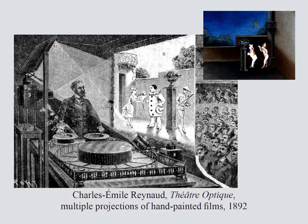Reynaud employed stock characters and stories from the Commedia dell'arte, because that's what the 19th century audience was familiar with. On the left we have Columbine, the love interest. In the center is Piero, the sad clown, also known as Pagliacci. On the right is Harlequin, another clown who always ends up getting the girl. Reynaud's usage of Commedia dell'arte characters is a good example of how new media usually adopts the conventions of older media, at least to start with.